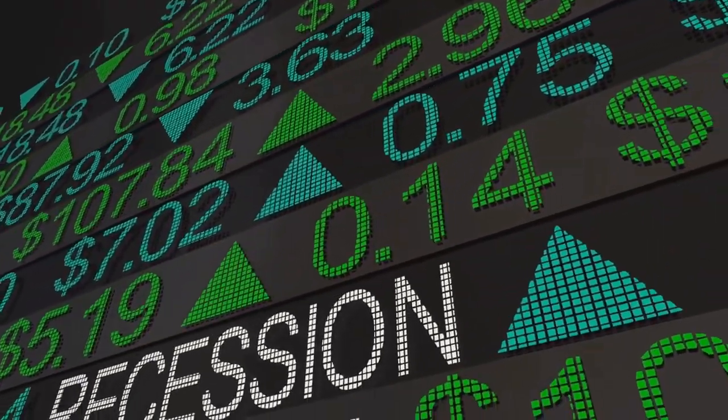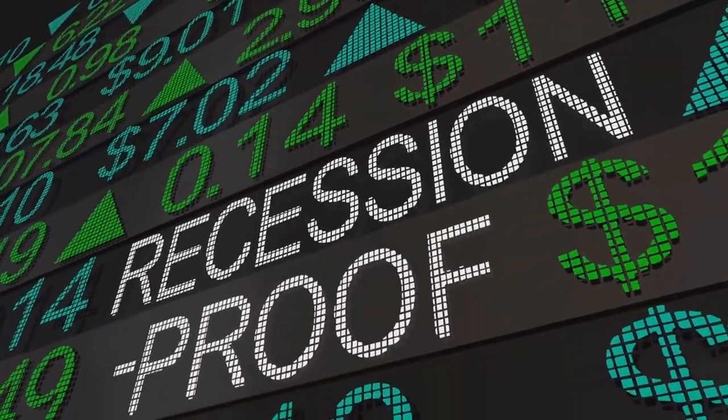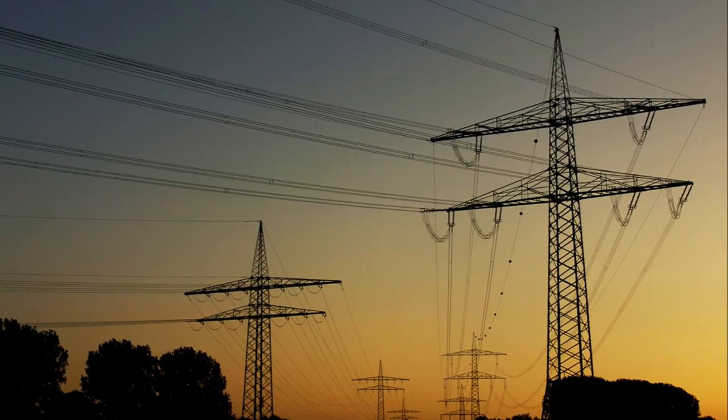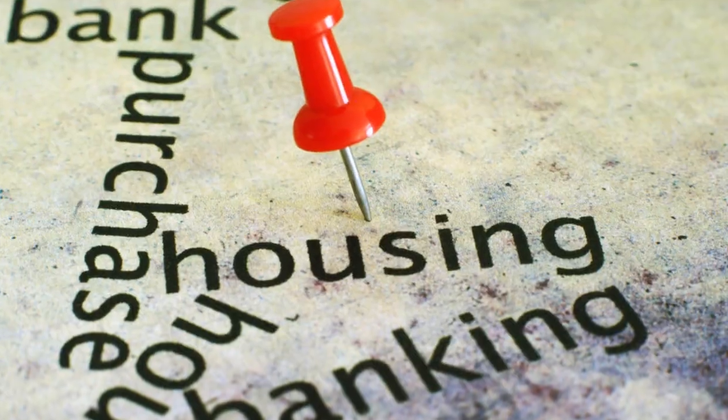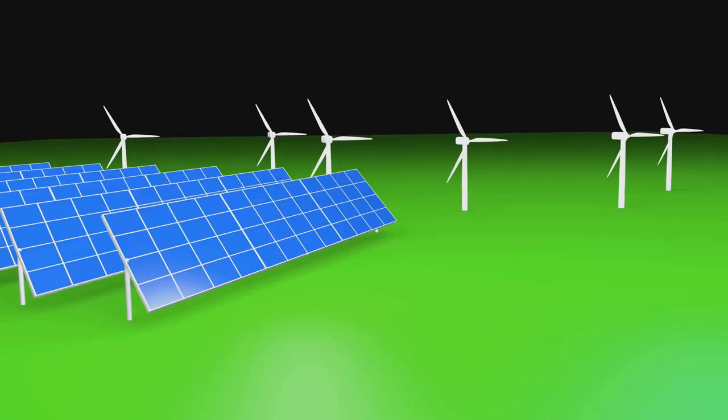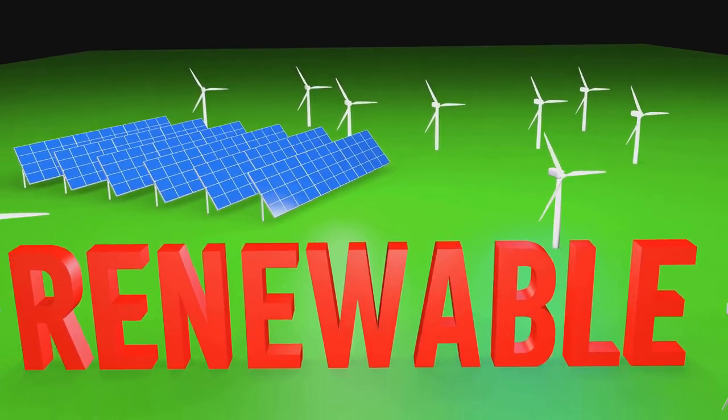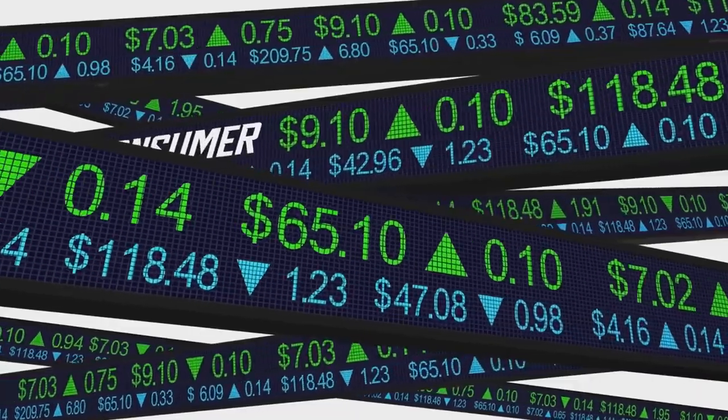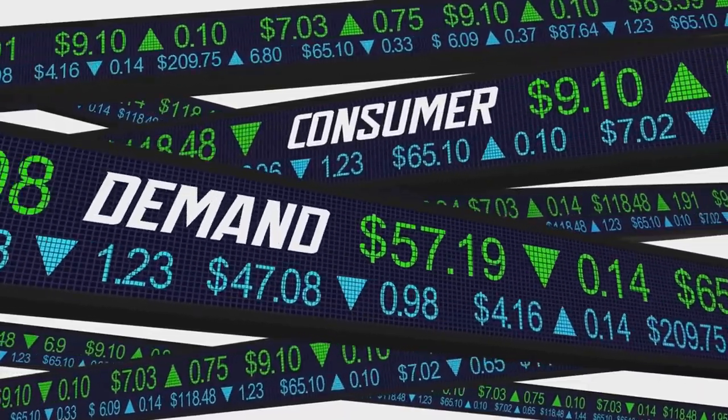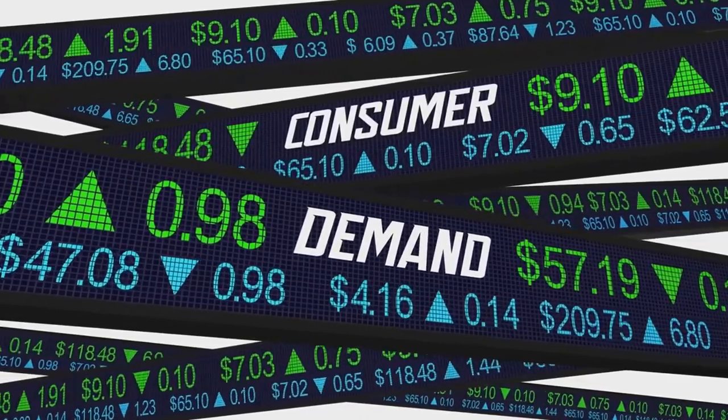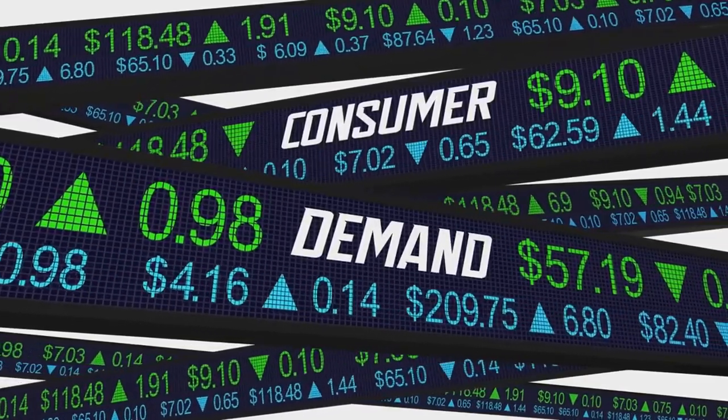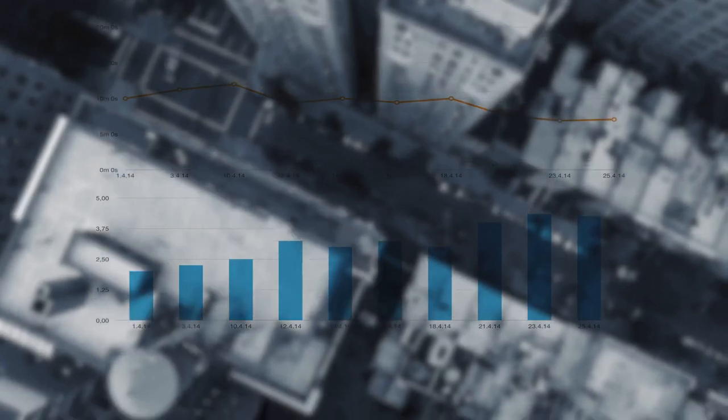This is because the companies they represent deal in essential goods and services. Think electricity, food and shelter. No matter how the economy is faring, people will always need to eat, keep the lights on and put a roof over their heads. In bad economic times, the sales of consumer staples like food, beverages and household products continue to remain steady. The demand for utilities also remains resilient.